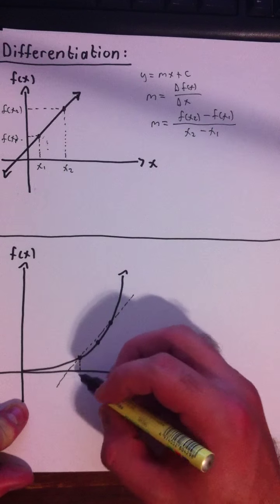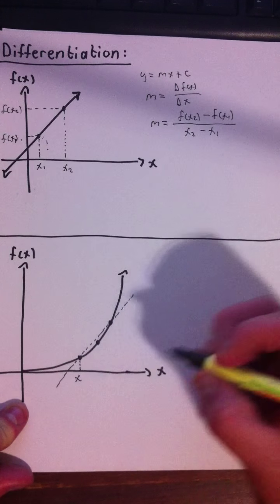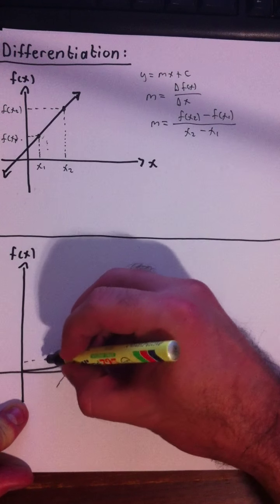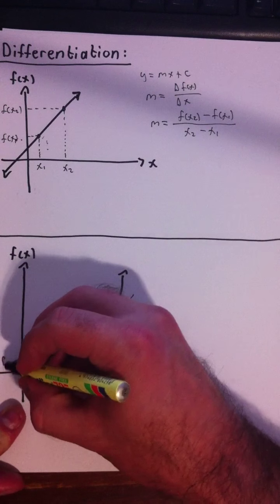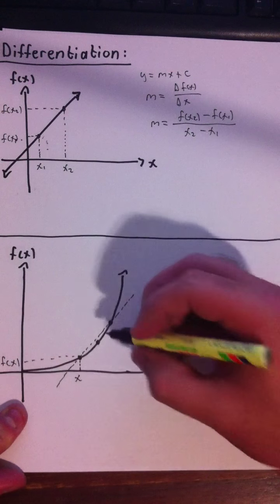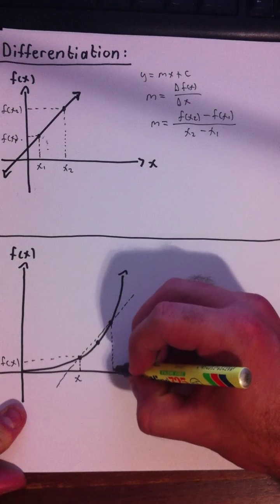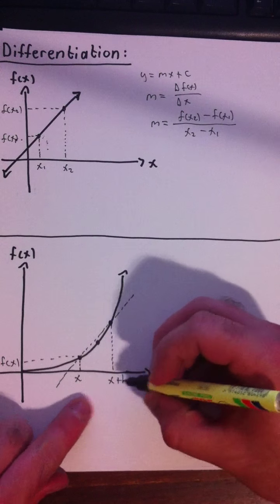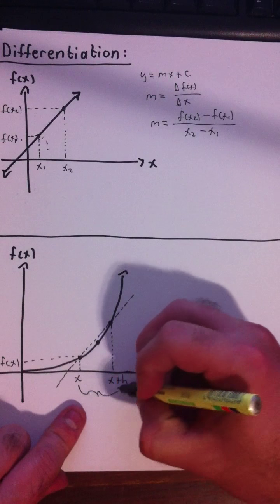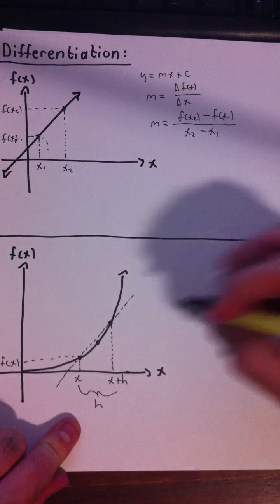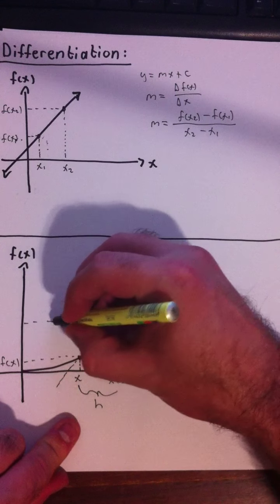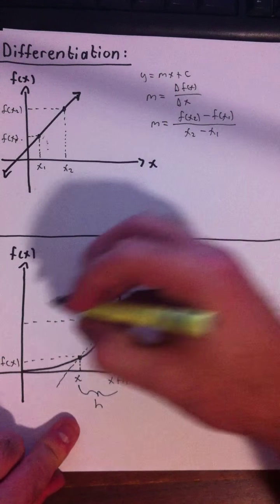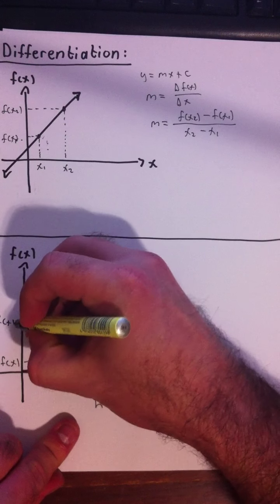Let's call this value here for the first point, we call this x, and then the corresponding output value f of x. Now we do the same for the other point, except we call this x plus h. That just tells us we moved some distance h. Corresponding output value would be f of x plus h.